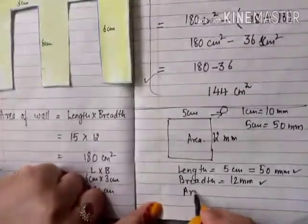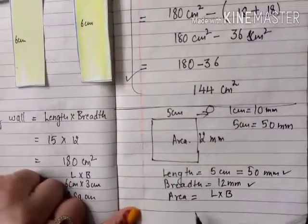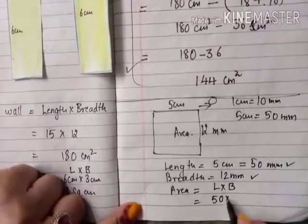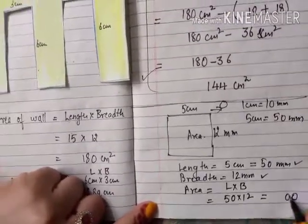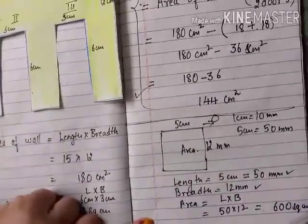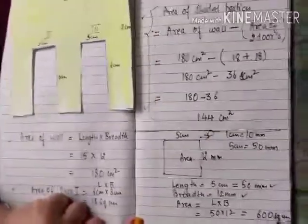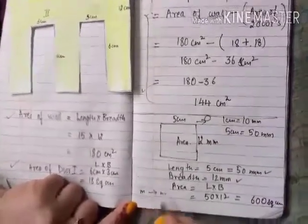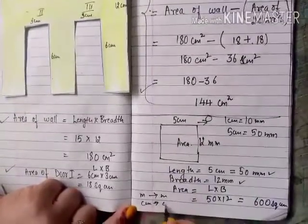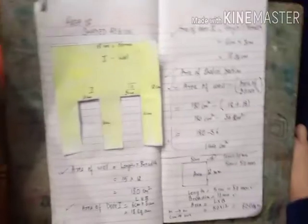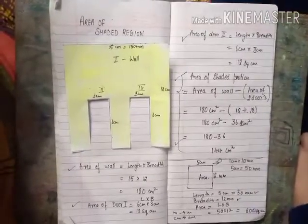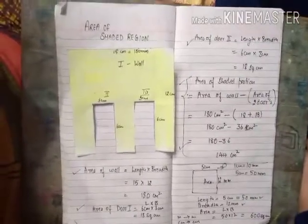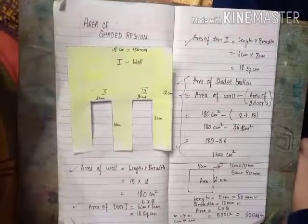Once units are the same, we keep both in millimeters. Area equals length multiplied by breadth: 50 multiplied by 12 equals 600 square millimeters. Make sure your units are the same — if the measurements are in meters, convert to meters; if in centimeters, use centimeters. It depends on the question given. Apply this concept and do the same question in your notebook — this is the first question of your assignment.